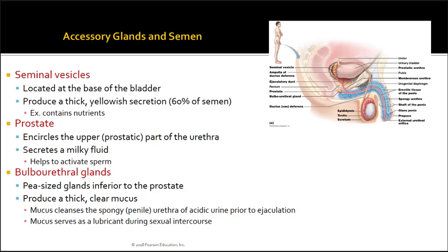The seminal vesicles are located at the base of the bladder and produce a thick yellowish secretion. Most importantly, they contribute the majority of the semen volume, and they contain nutrients that are very important for the survival and health of the sperm.